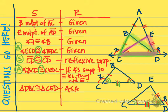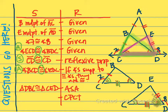Remember what we're trying to prove — we're trying to prove that segment AC and AD are congruent. The two parts of these triangles that belong to AC and AD are BC and ED. Because I know these two triangles are completely congruent, by CPCTC we can state that BC is congruent to ED. And then I can go back to my picture and change those tick marks.